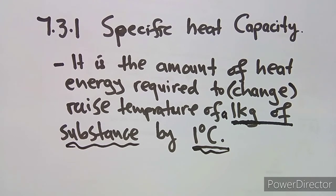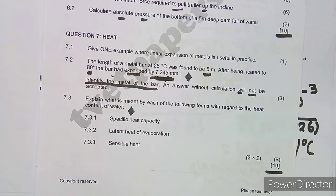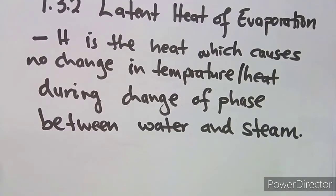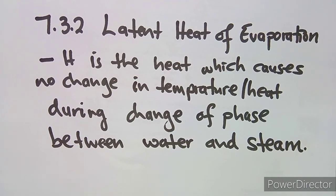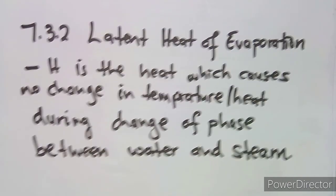The second term in 7.3 is the latent heat of evaporation. The latent heat of evaporation is the heat which causes no change in temperature — it is the heat absorbed during the phase change between water and steam. It does not affect the temperature during this phase transition.